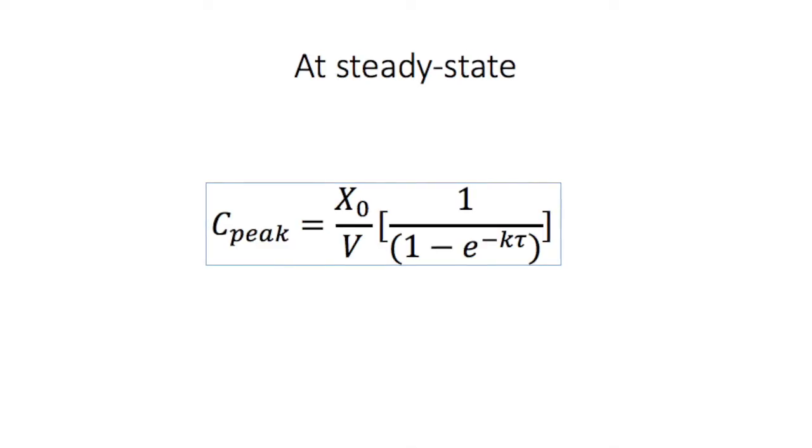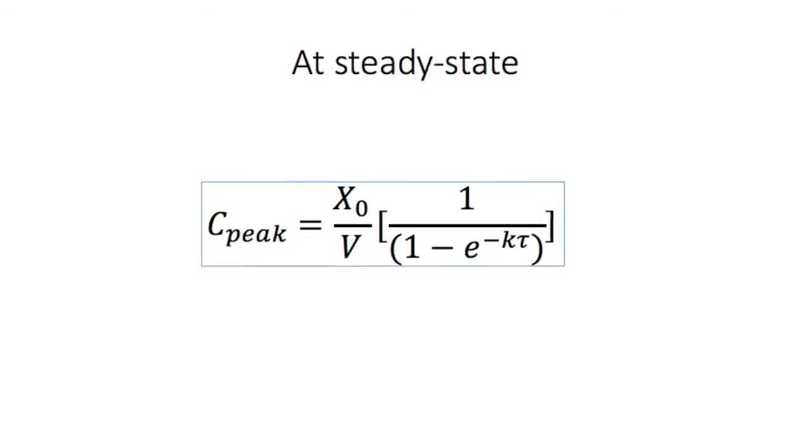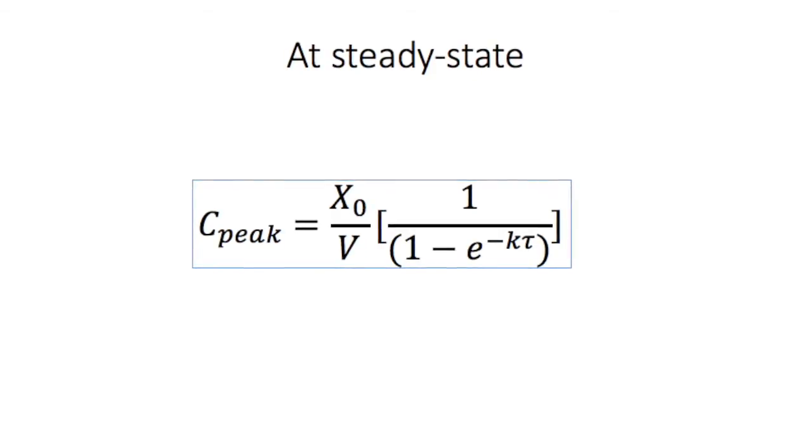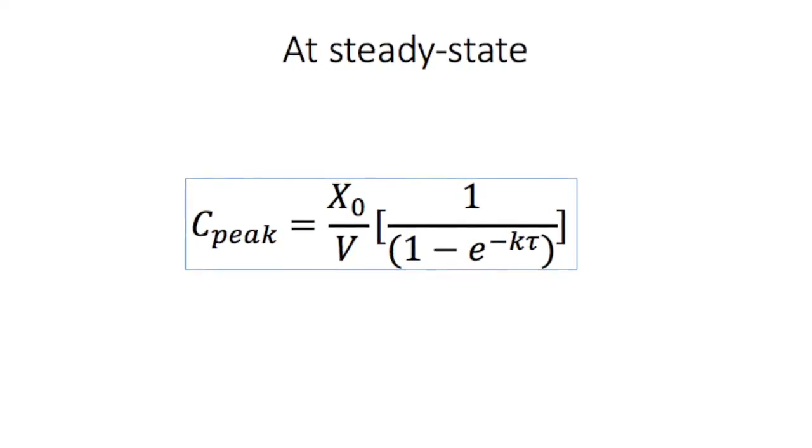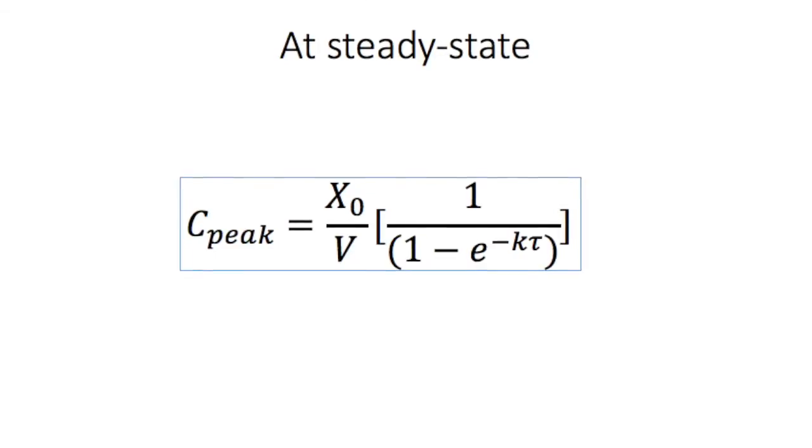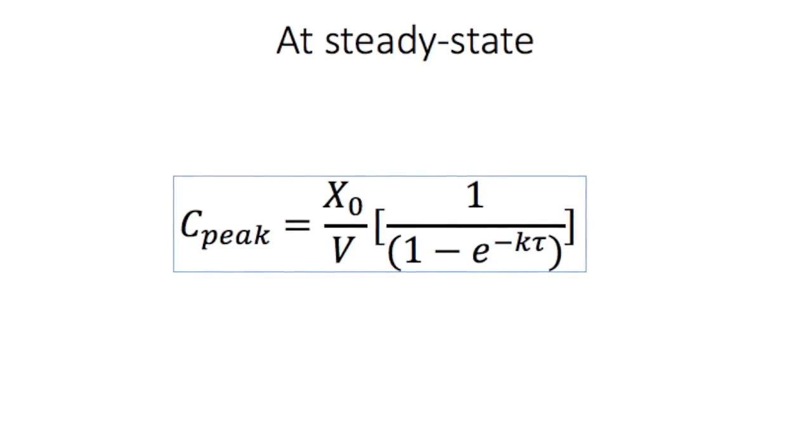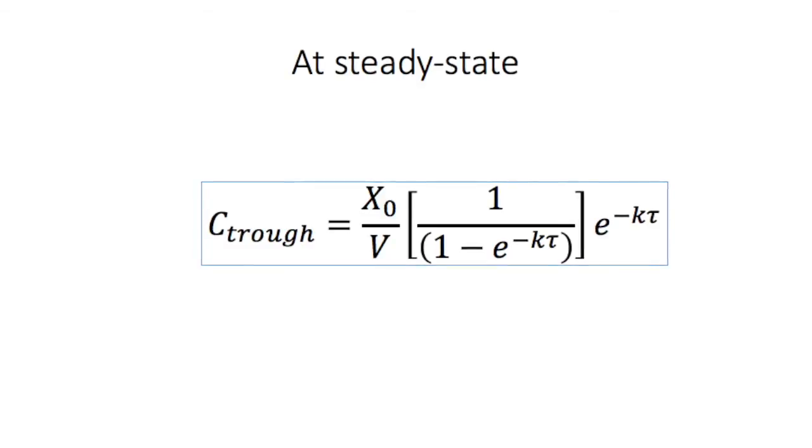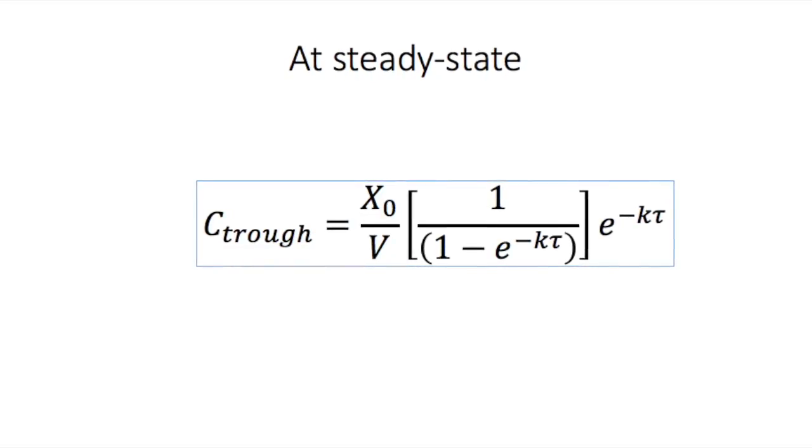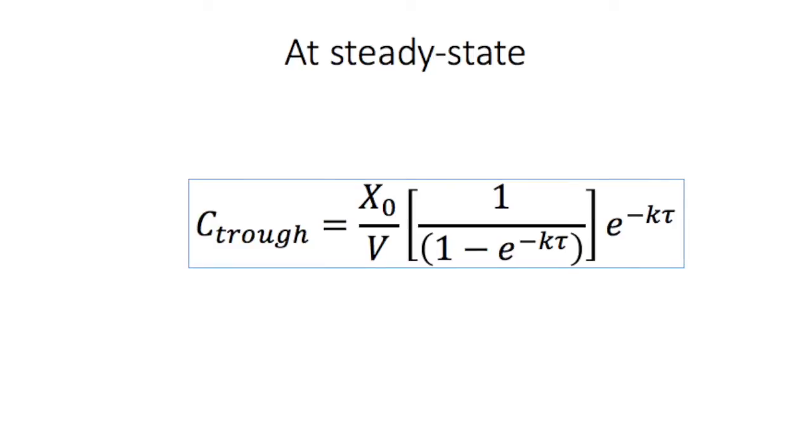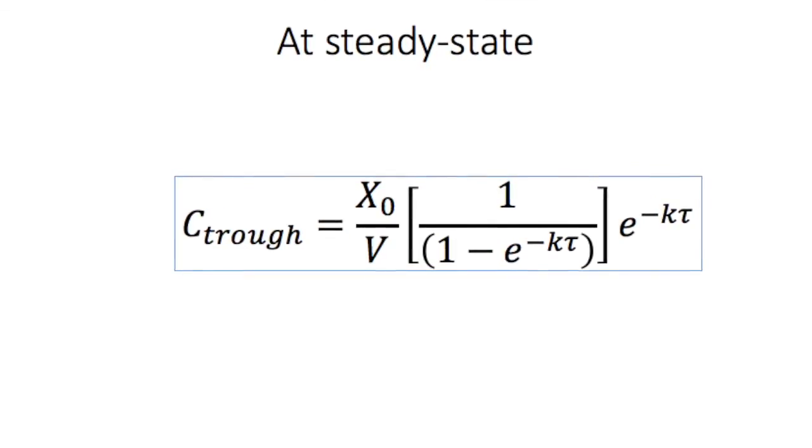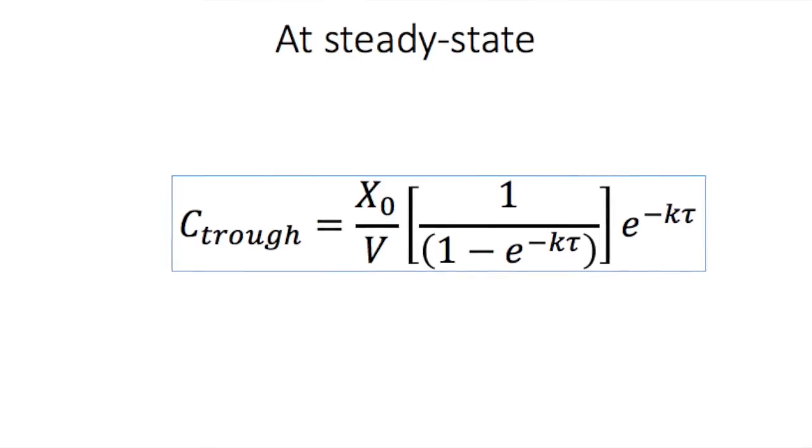We can calculate the peak plasma concentration at steady state, which occurs immediately after the dose is given, by multiplying the concentration after the first dose, which is C₀ or the amount of the first dose divided by the volume of distribution, by the accumulation factor at steady state. And similarly, we can calculate the trough plasma concentration, which is the concentration at the end of the dosing interval, by accounting for drug loss over the dosing interval, which is represented by the last term of this equation.